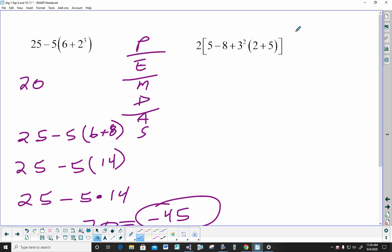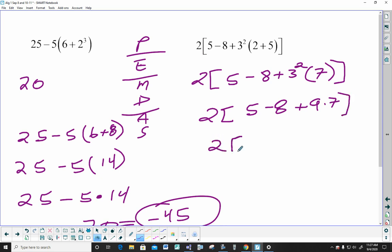I'd love to distribute that 2 in, but I can't. I have to start inside. The bracket is like a parenthesis, but then I have this parenthesis inside that, so I have to start there. 2 bracket 5 minus 8 plus 3 squared and a 7. I'm still working inside. This adding and subtracting stuff I can't take care of until I take care of this multiplication. 2 bracket 5 minus 8 plus 3 squared is 9. The parenthesis, now there's nothing inside, is multiply. 2 bracket 5 minus 8 plus 9 times 7 is 63.